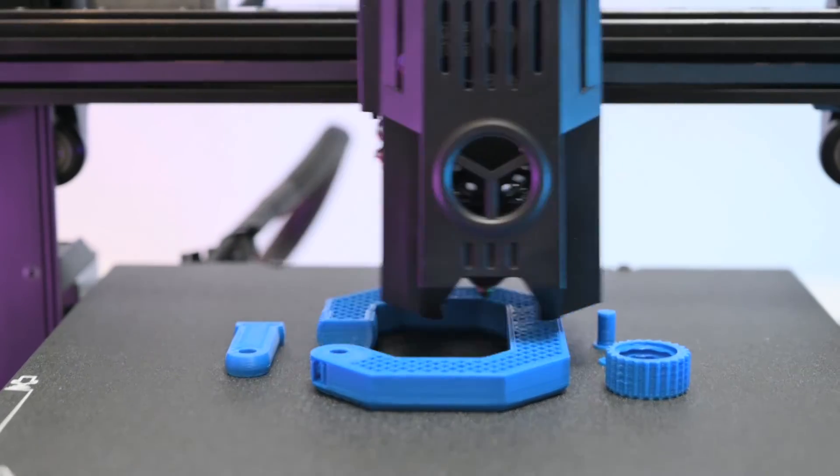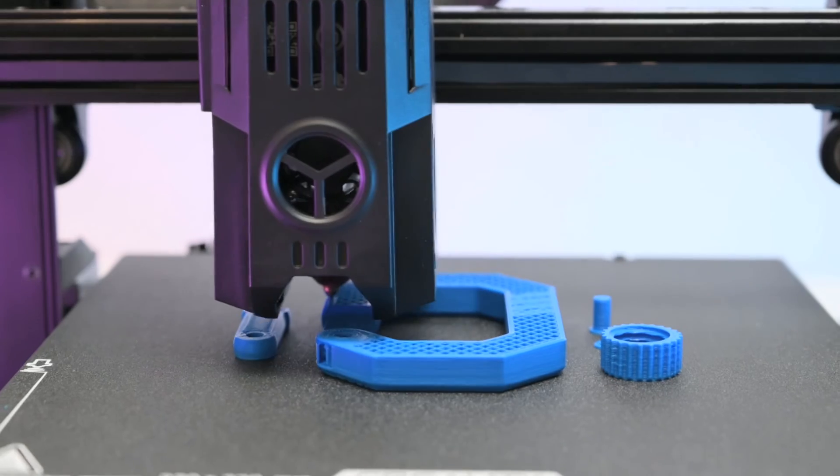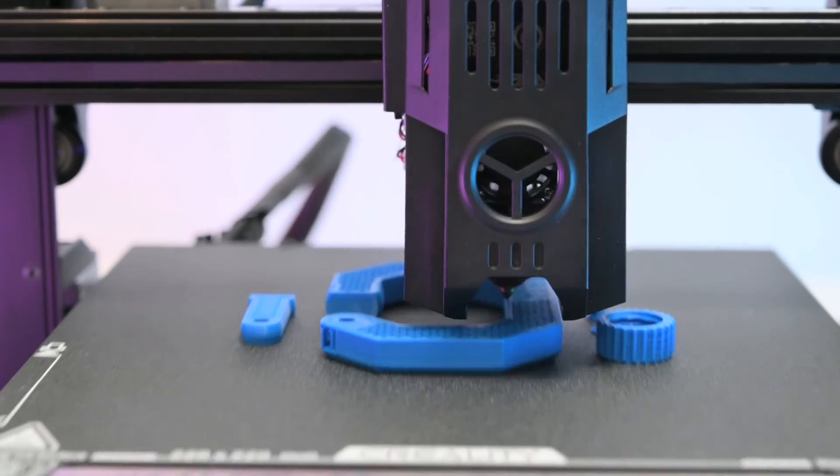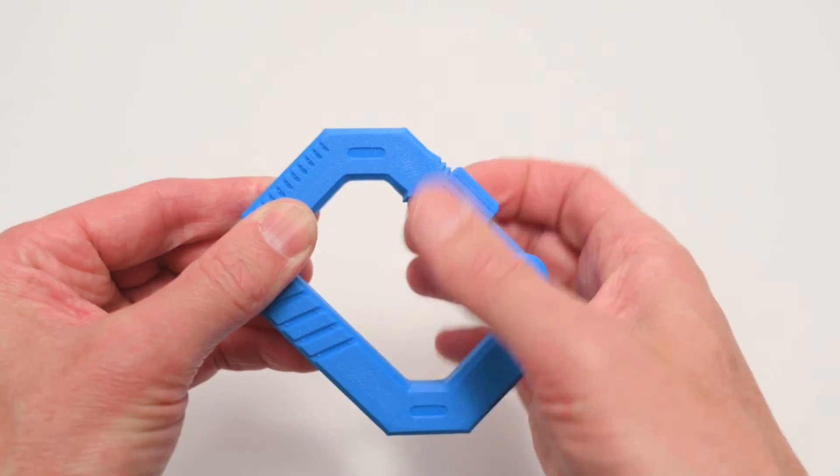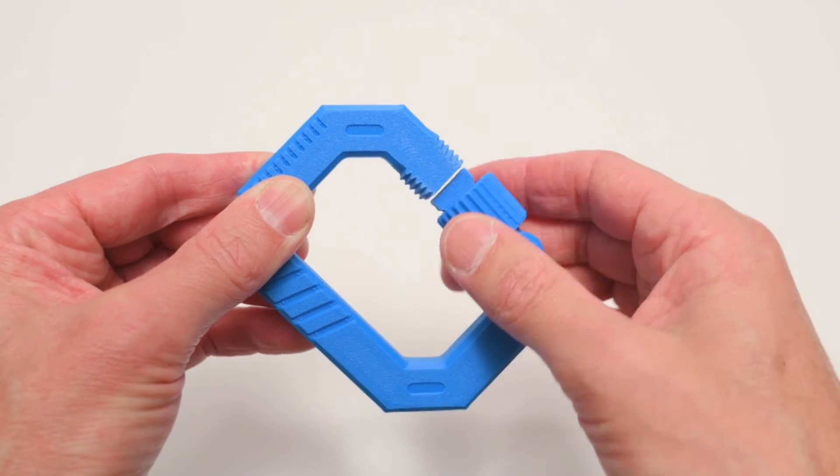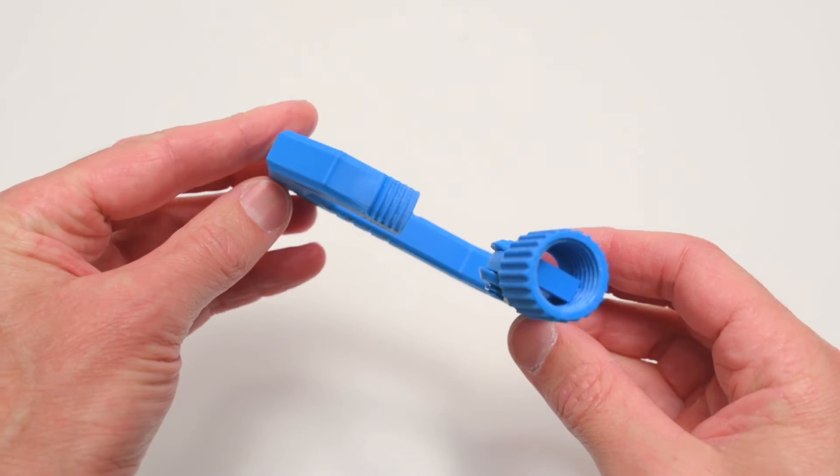Next up we've got a print of a screw lock carabiner. This print is made up of 5 individual parts and these parts are then assembled to build the item. I did find the tolerances on the moving parts to be a bit tight but overall it turned out to be a decent functional print.